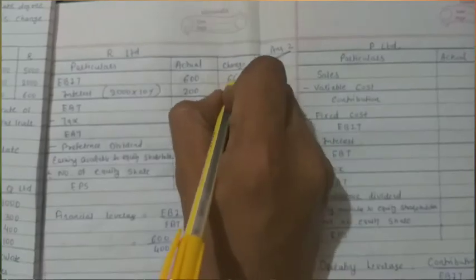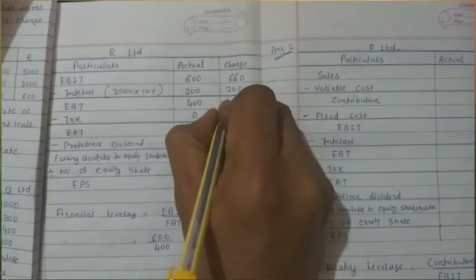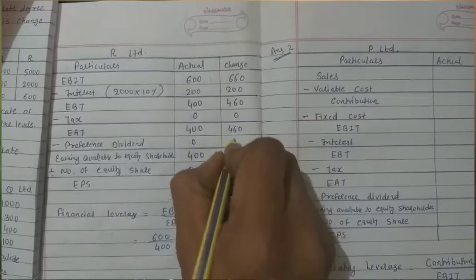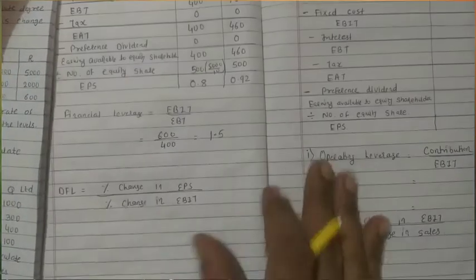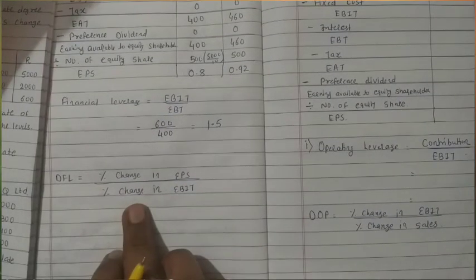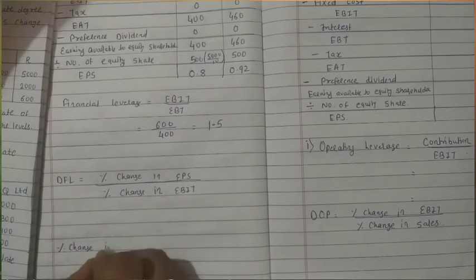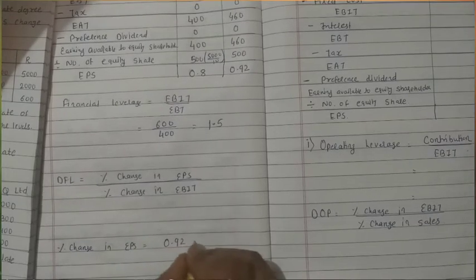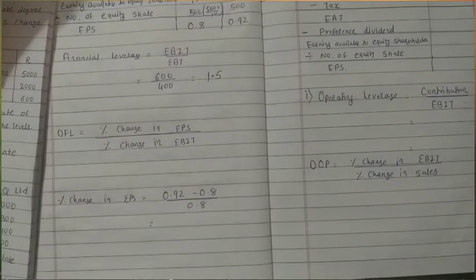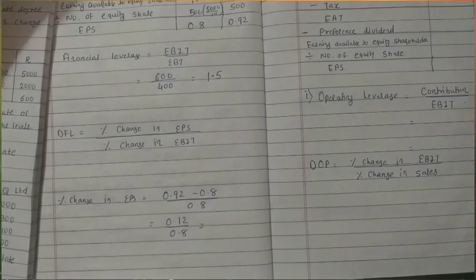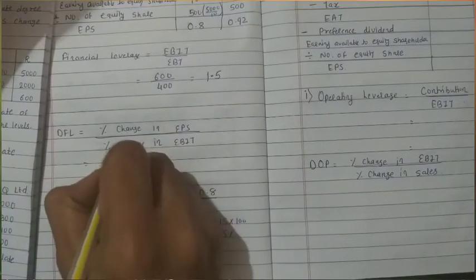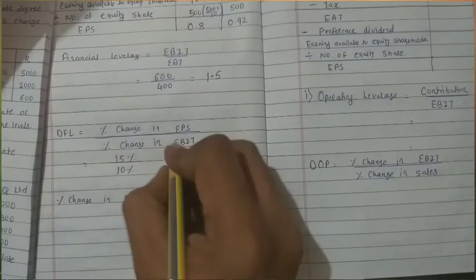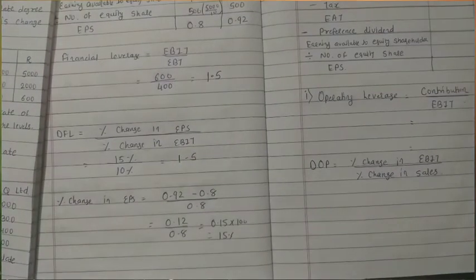For degree, change in EBIT by 10% gives 660. Interest remains fixed at 200. EBT = 660 − 200 = 460. Preference dividend = 0, earning = 460. Number of shares = 500. Changed EPS = 460 ÷ 500 = 0.92. % change in EPS = (0.92 − 0.80) ÷ 0.80 = 0.12 ÷ 0.80 = 0.15 × 100 = 15%. Degree of financial leverage = 15 ÷ 10 = 1.5. Our calculation is over.